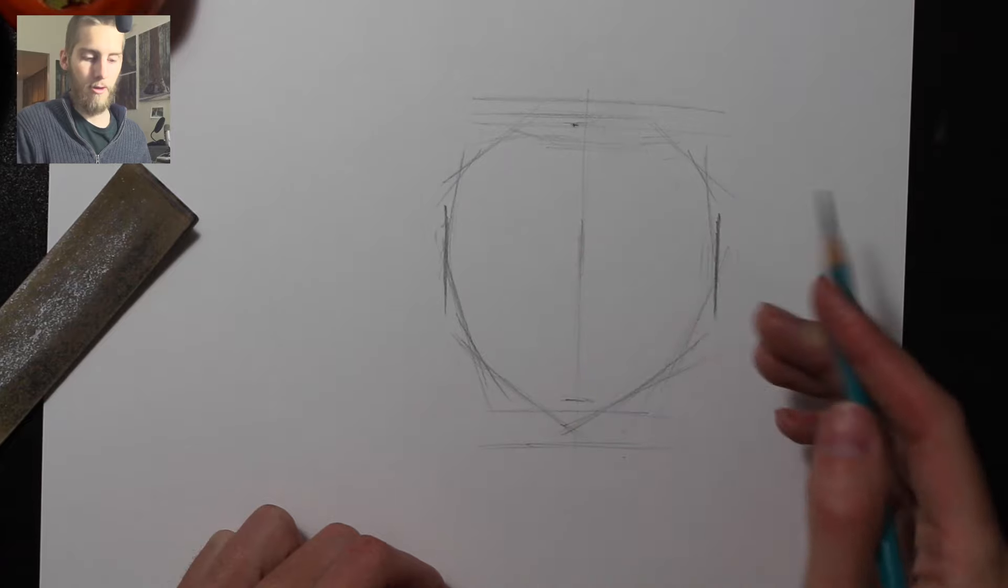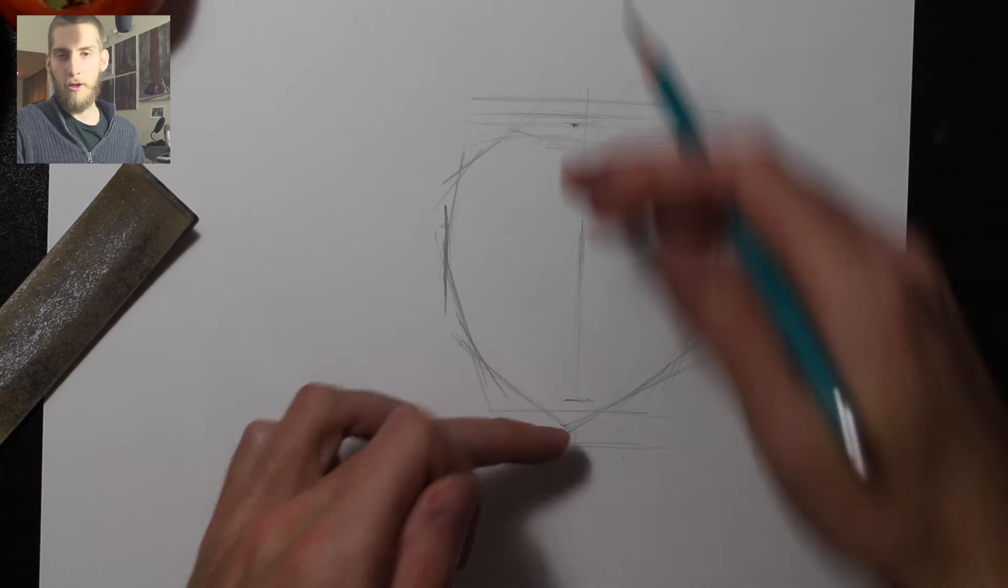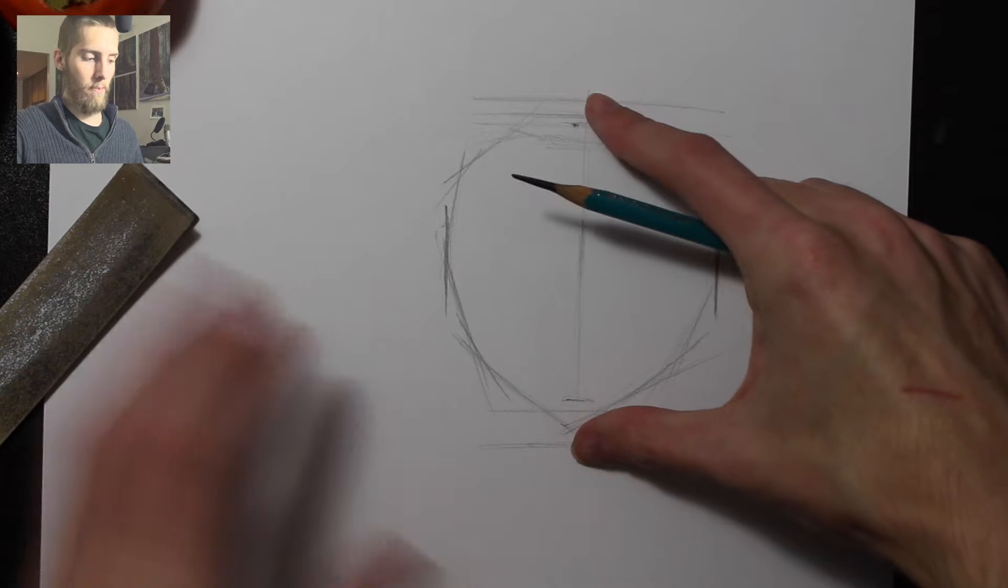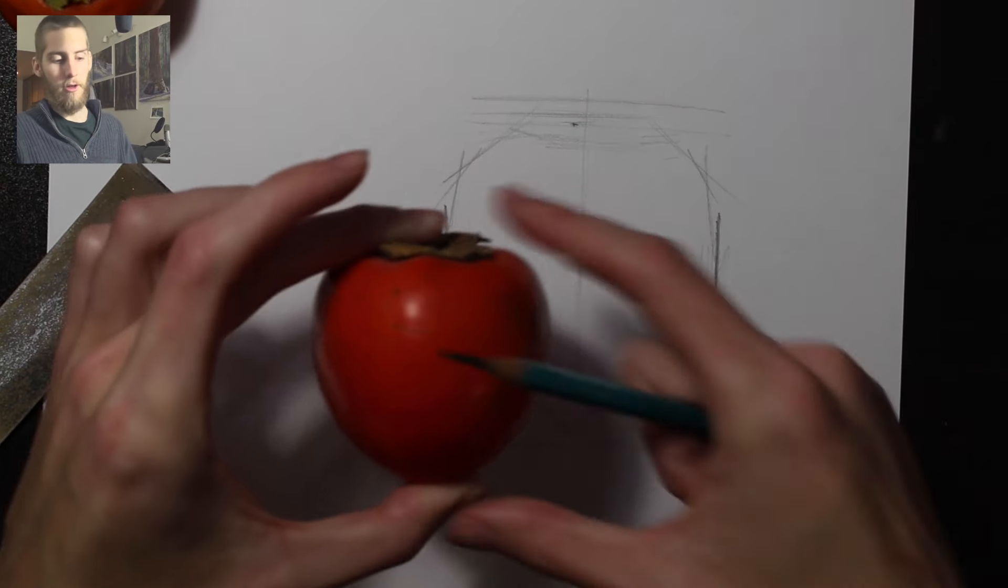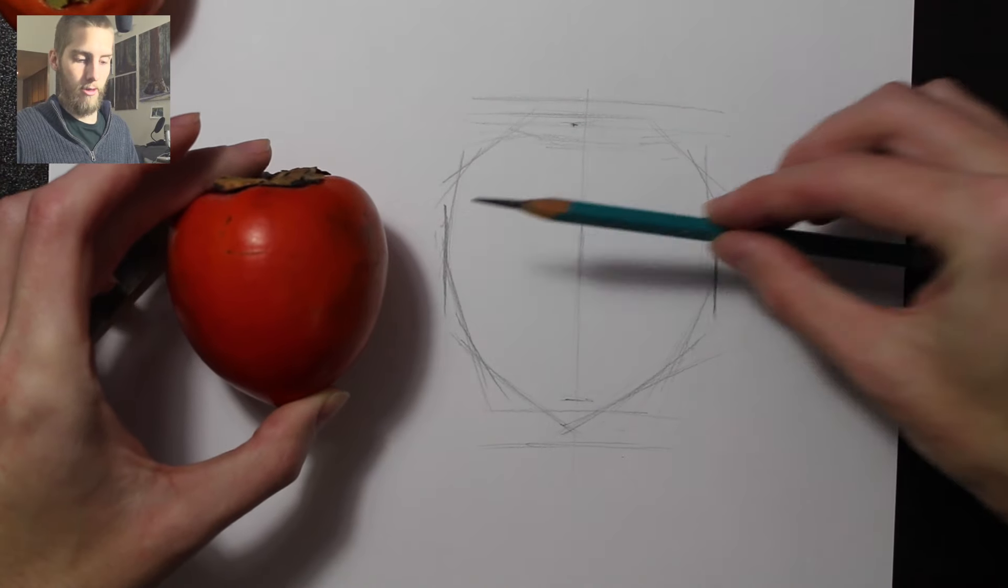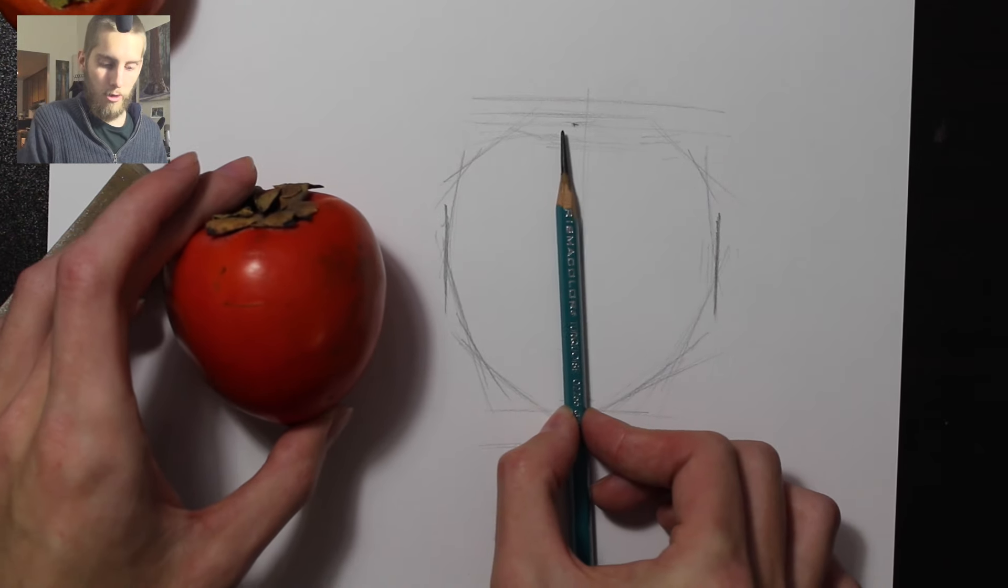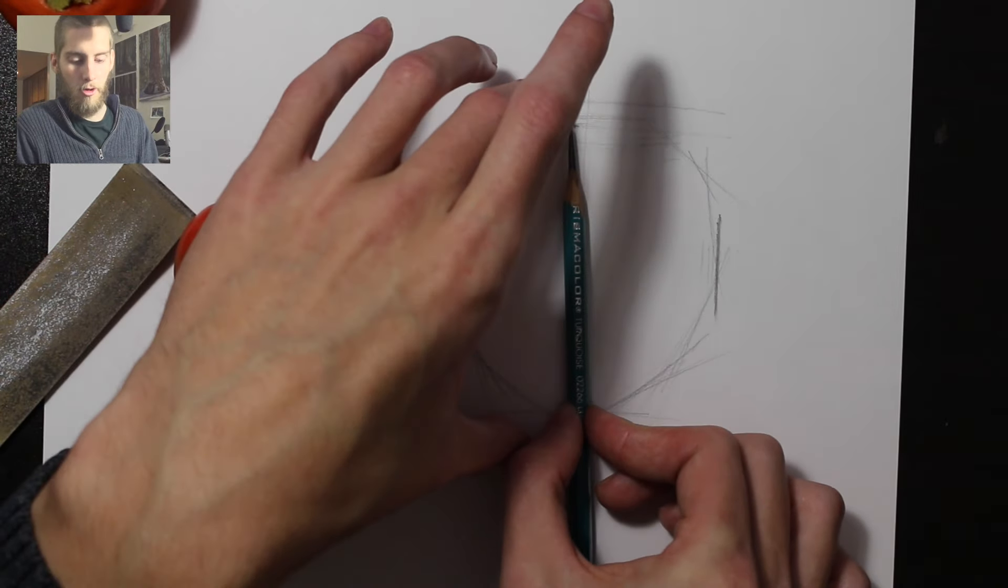And using these little guides to help you get a little bit closer to that, rather than just guessing. We knew that this persimmon was taller than it is wider. So now that I have the width, I know the height's going to be taller than that.